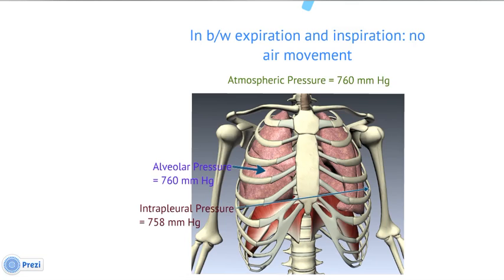There are three environments to consider when discussing air movement. The first is the atmospheric environment — the outside of our bodies. Then there's the alveolar environment, the terminal end of the respiratory tract where the small alveolar sacs are and where gas exchange occurs. Finally, there's the intrapleural environment — the space between the outside of the lungs and the inside of the thoracic cavity, indicated by the arrow in the image.